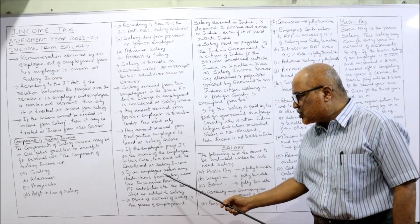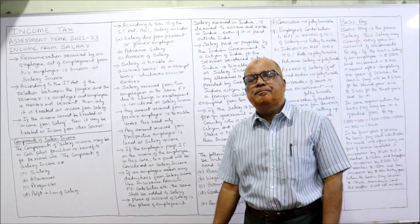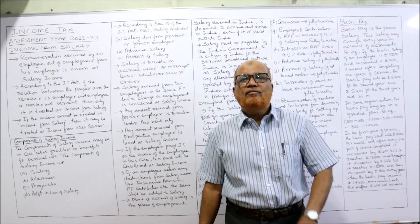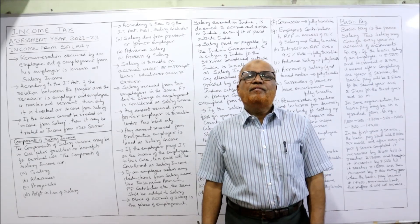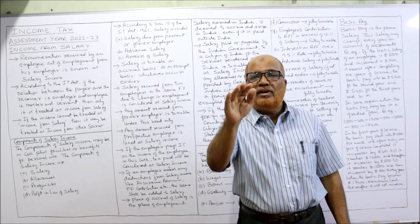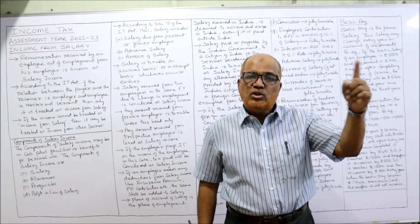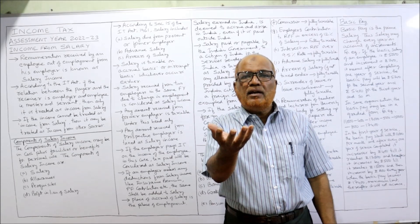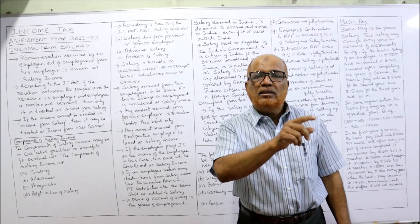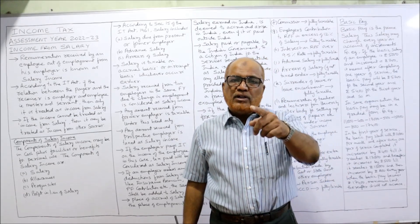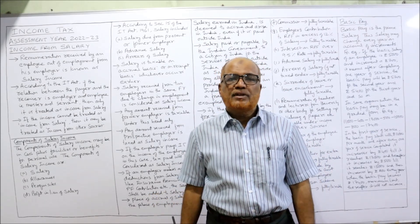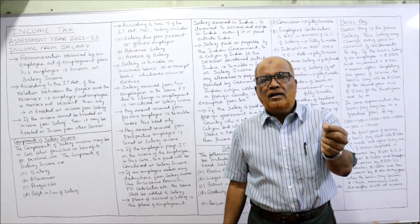If an employer makes any deductions from salary income — like insurance premium or PF contribution — the same should be added back. For example, Mr. X gets 50,000 per month but the employer deducts 10,000 for insurance premium and PF contribution, so net he receives 40,000. The Income Tax Act says whatever deduction is made by the employer must be added back to salary. So 40,000 plus 10,000 = 50,000 will be the income from salary.